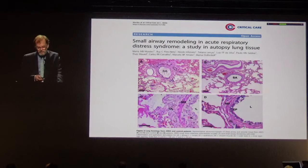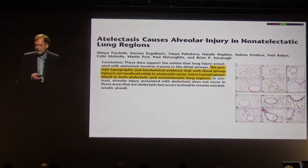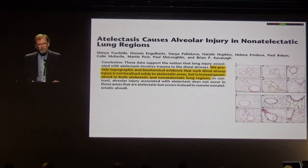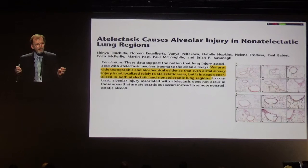The experimental studies—this series from the group of Brian Kavanagh—have shown that such distal airway injury is not localized solely to atelectatic areas, but is instead generalized in both atelectatic and non-atelectatic regions. So you could imagine airway closure exists everywhere, with airway injury everywhere, but reopening only in the non-dependent part of the lung.